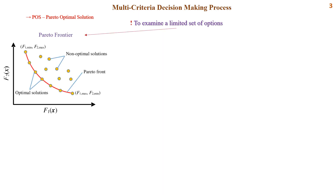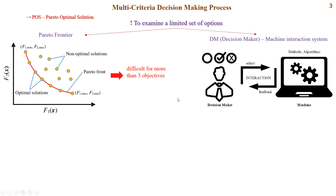One: reduce the number of options based on the optimization process to use a small optimal set of solutions, using the so-called Pareto Frontier. But this approach is difficult for optimization problems with more than three objective functions. The second way is visualizing the space of these solutions to help users select the best solution meeting their subjective criteria. This can be done by using a DM matching interaction system.